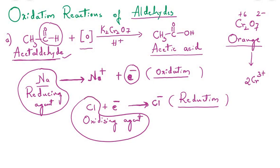When a species gains an electron, that species is called an oxidizing agent. Cl in elemental form has an oxidation state of zero, but when it gains an electron it becomes −1. There is a decrease in oxidation number, which means reduction. The substance undergoing decrease in oxidation number is called the oxidizing agent.